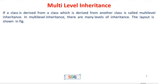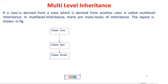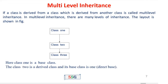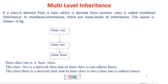The second type is multi-level inheritance. In single inheritance there is one base class and one derived class. In multi-level inheritance, a class is derived from a class which is itself derived from another class. There are many levels of inheritance. Class one is the base class; class two is a derived class with base class one; class three is a derived class with direct base class two, and indirect base class one.